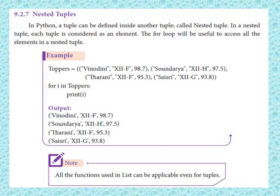Simple example: we have one tuple named 'toppers' containing 4 inner tuples. The values are: Vinodini with 98.7%, Soundariya with 97.5%, another with 95.3%, and another with 93.8%. Using 'for i in toppers: print(i)', we loop 4 times and print each tuple. All functions applicable to lists can be applied to tuples too.